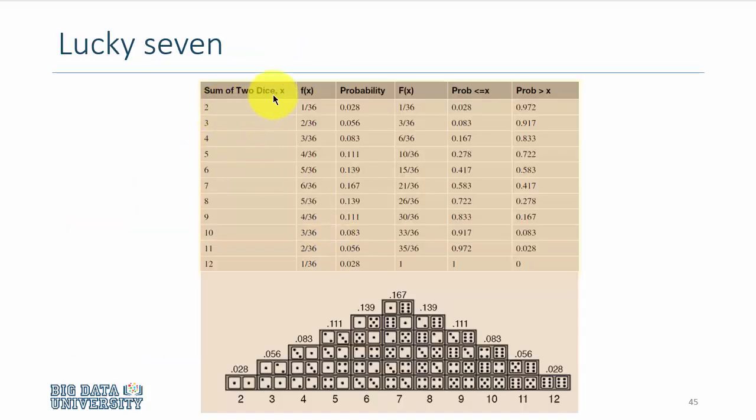If you think about the sum of two dice being 2, there's only one possibility out of 36. Getting a 3, you have two possibilities. Getting a 4, you have three possibilities. Getting a 5, you have four possibilities, and so on. The most frequently possible sum of two dice is 7, with probability 6 out of 36, which is 0.167. If you sum these probabilities up, that is 0.02 plus 0.056, they all sum up to 1.